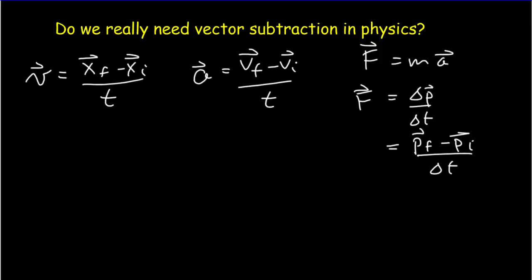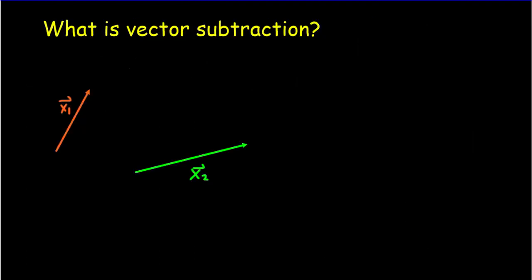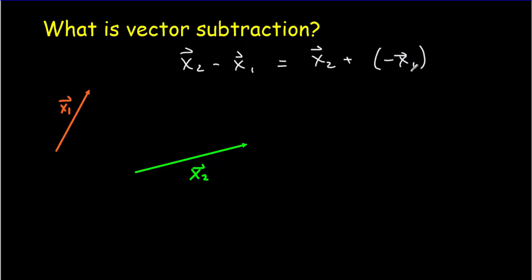So yes, it's important. What does it mean to subtract vector x1 from x2? I suggested in the warm-up that what you need to do is add the opposite. So we're going to add negative x1, where negative x1 is the opposite vector. An opposite vector is exactly the same length but in exactly the opposite direction. That's the opposite vector.